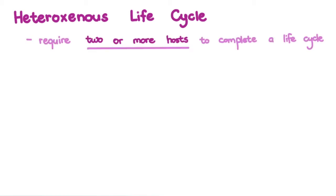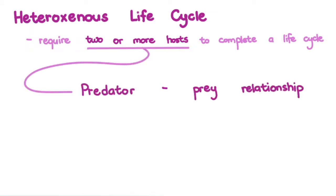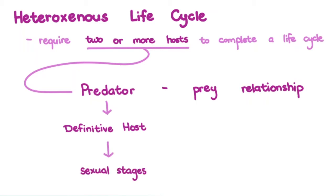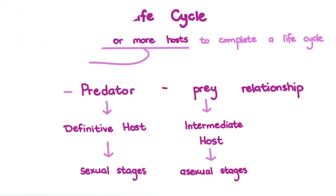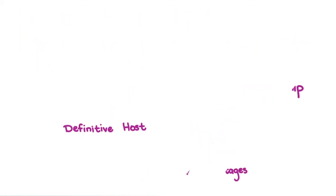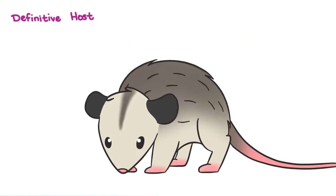Moreover, their hosts have a predator-prey relationship, with the predator being the definitive host where sexual stages occur, and the prey being the intermediate host where asexual stages occur. For Sarcosystis neurona, the definitive host is the opossum.